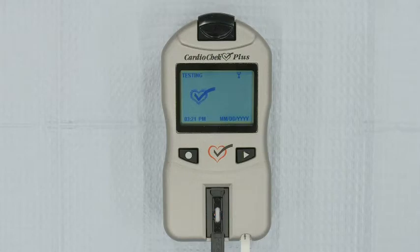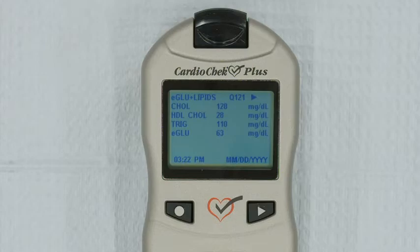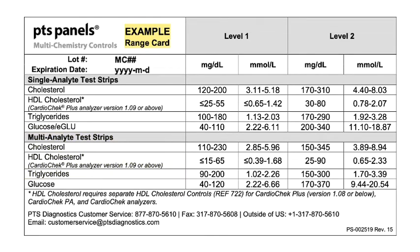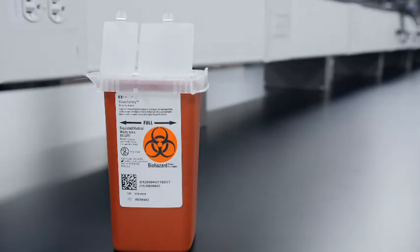The analyzer will automatically begin testing and will return results in as little as 90 seconds. Do not move the analyzer while it is testing. Once the results appear, check your range card to see if your results are within the specified range. Look under the header single analyte test strips on the card for the glucose range. Look under the header multi-analyte test strips on the card for cholesterol, HDL cholesterol, and triglycerides ranges. Record your results, remove the test strips, and discard them in a biohazard container.